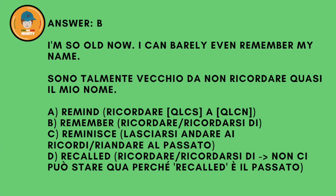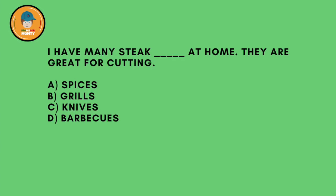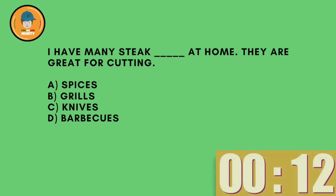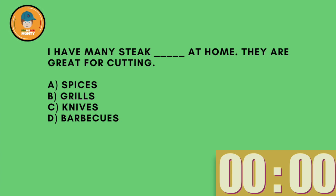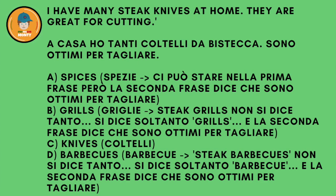I have many steak mmm at home. They are great for cutting. A: spices. B: grills. C: knives. D: barbecues. And the answer is C — knives — because we know they're great for cutting — tagliare. So it has to be knives.